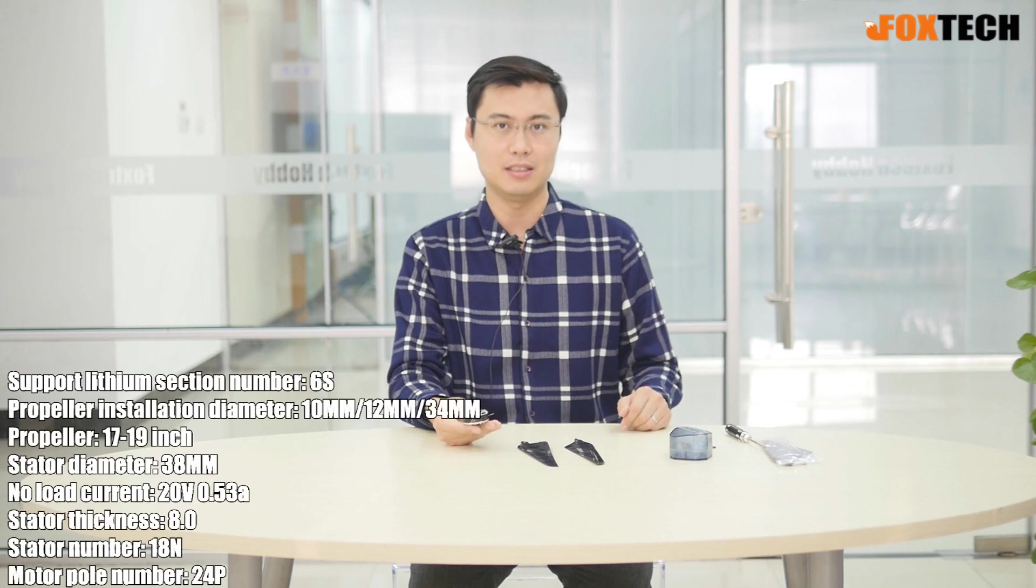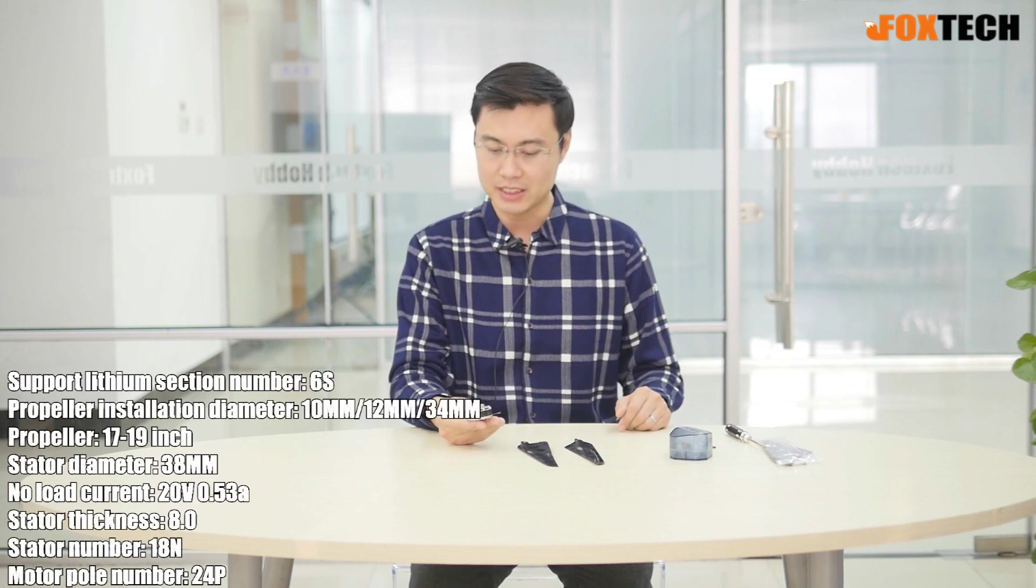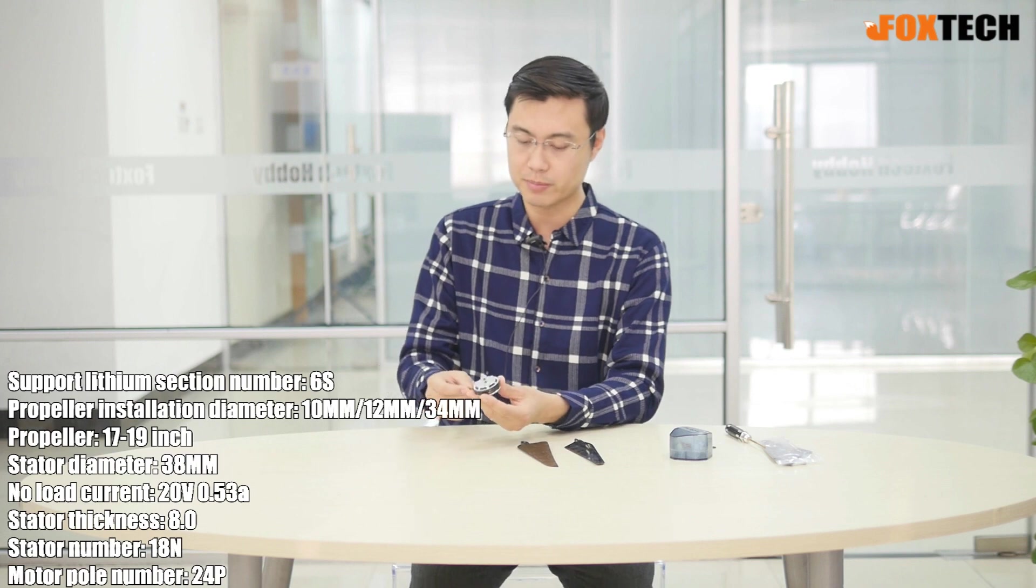The motor type is 4008 with the KV value 330. Just check the whole appearance of the motor. You can find it's actually very light. The weight of each motor is only 85 grams.